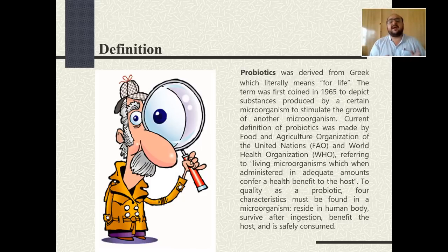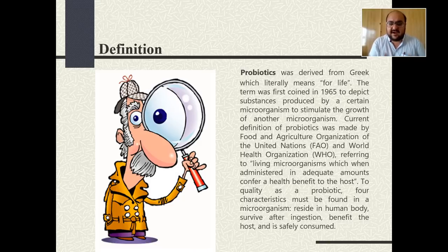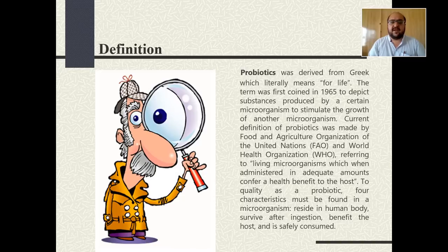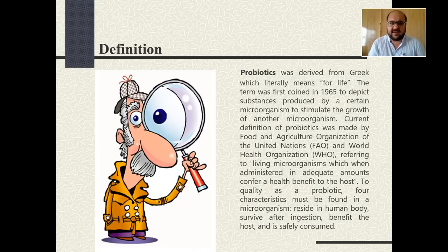There is a big difference between probiotics, antibiotics, and xenobiotics. Anti means against, so antibiotics are chemical substances produced by microorganisms. As we have studied in previous lectures, antibiotics are actually produced by living organisms and can be extracted from plants, animals, microorganisms, and different sources.